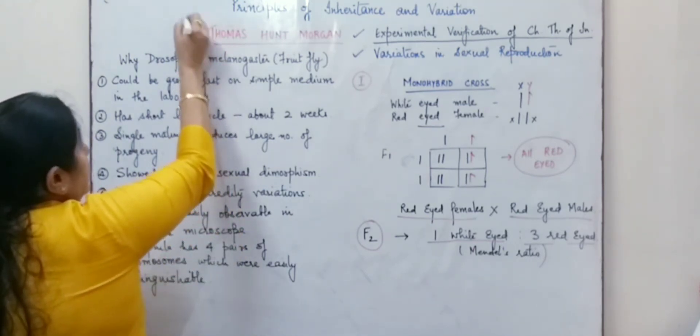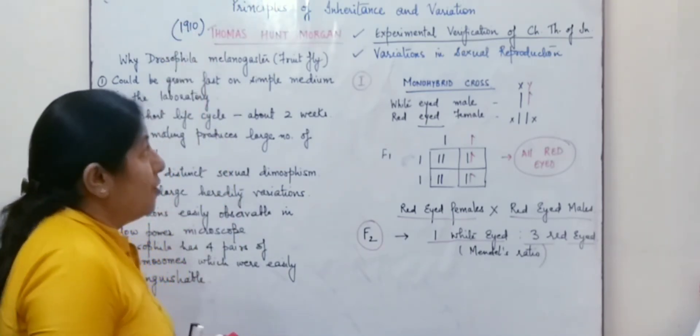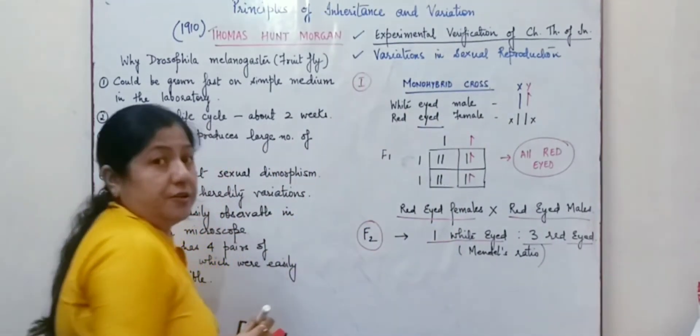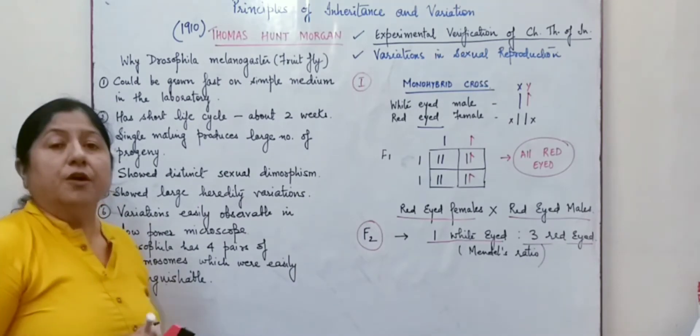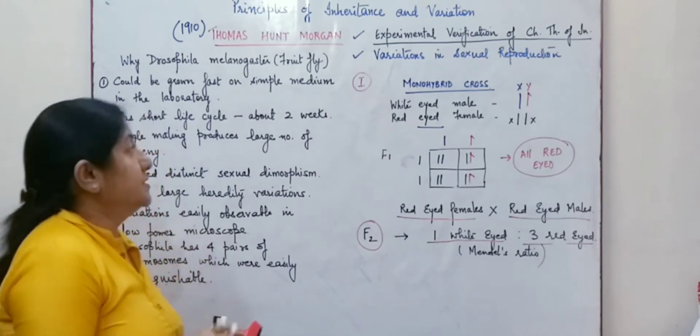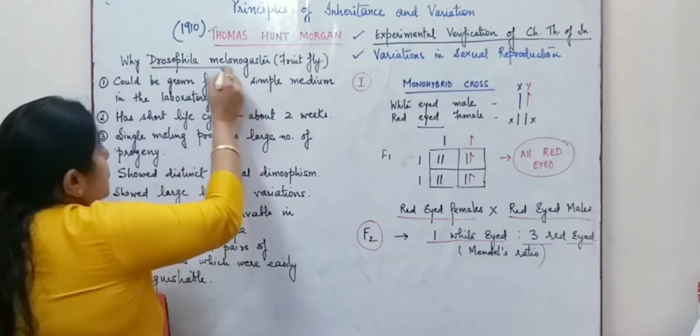He gave the experimental verification for the theory and also through his experiments he was able to explain the variations in sexual reproduction. For all his experiments he chose fruit fly, that is Drosophila melanogaster, and the reason for choosing Drosophila melanogaster was it could be grown fast on simple medium in the laboratory.